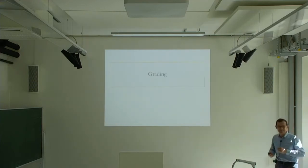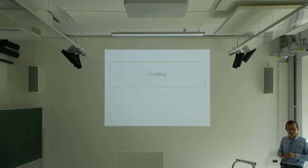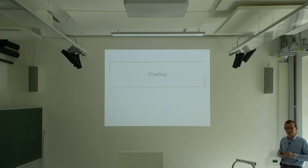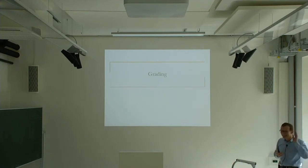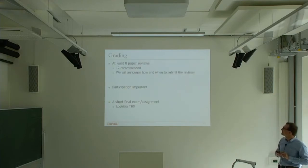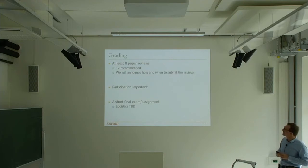Let's talk about grading — this is the most fun part of the course, I assume. But you're not here for grades, right? How many credits do you need for a PhD here? 18 — and this is three credits. So how many hours of work are you supposed to put in for a three-credit course? It's not that well-defined. So this is what I have in mind: at least eight paper reviews.